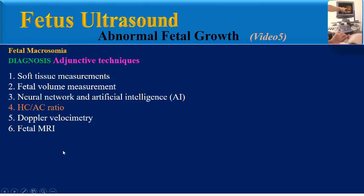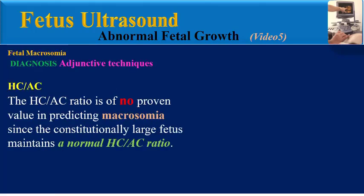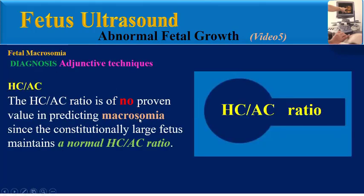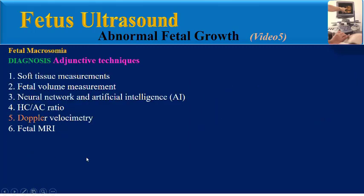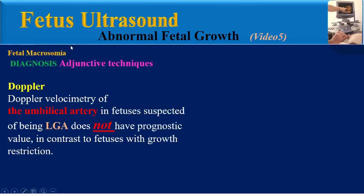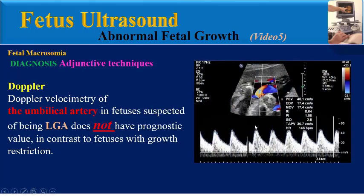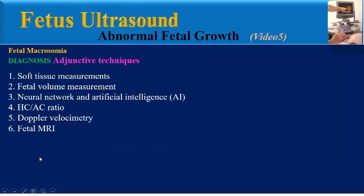HC-AC ratio: The HC-AC ratio is of no proven value in predicting macrosomia, since the constitutionally large fetus maintains a normal HC-AC ratio. Doppler velocimetry of the umbilical artery in fetuses suspected of being large for gestational age does not have prognostic value, in contrast to fetuses with growth restriction.